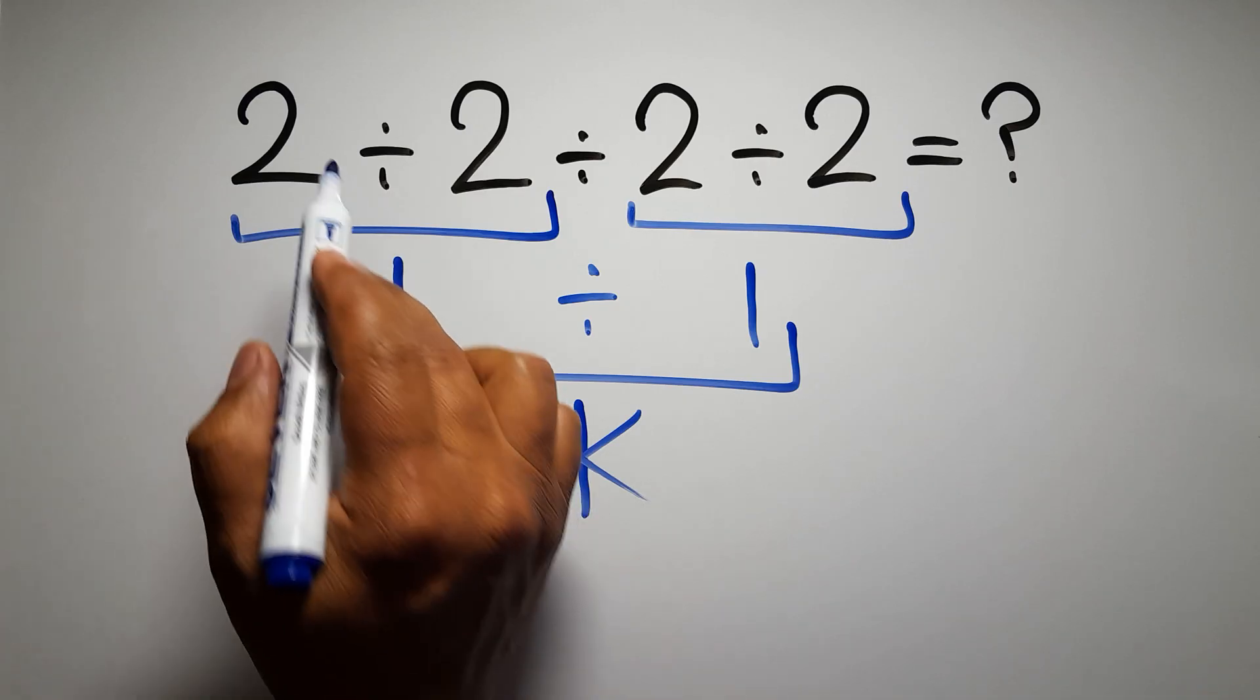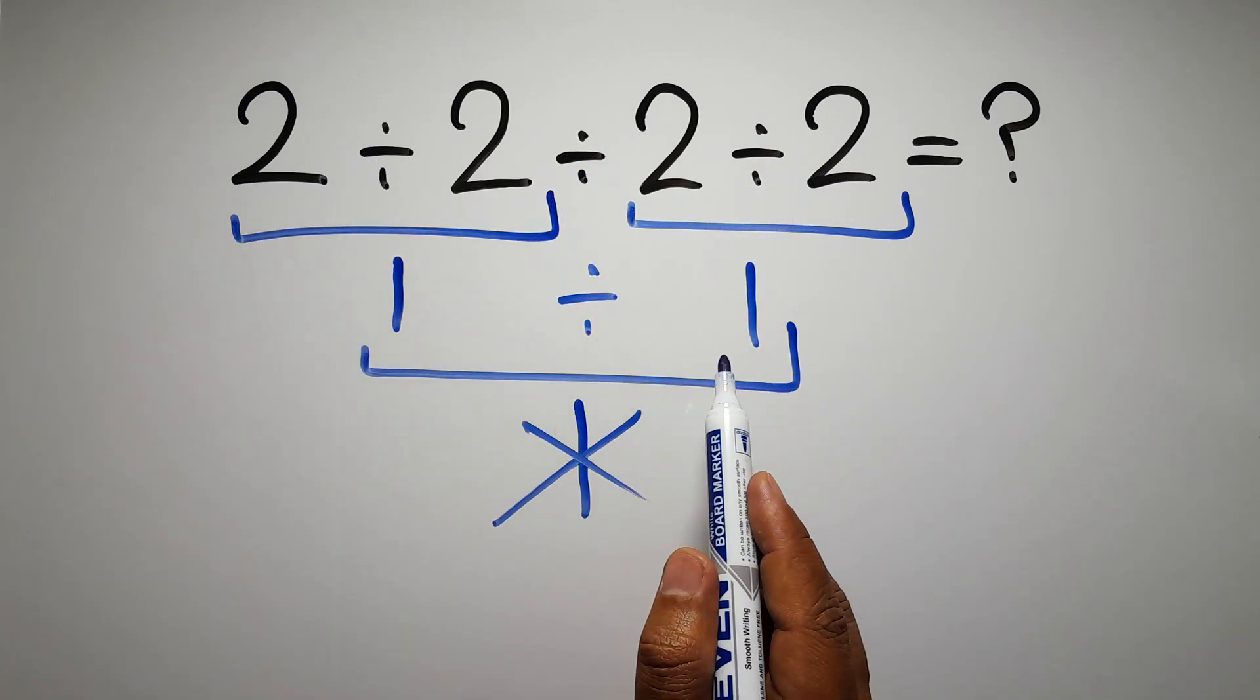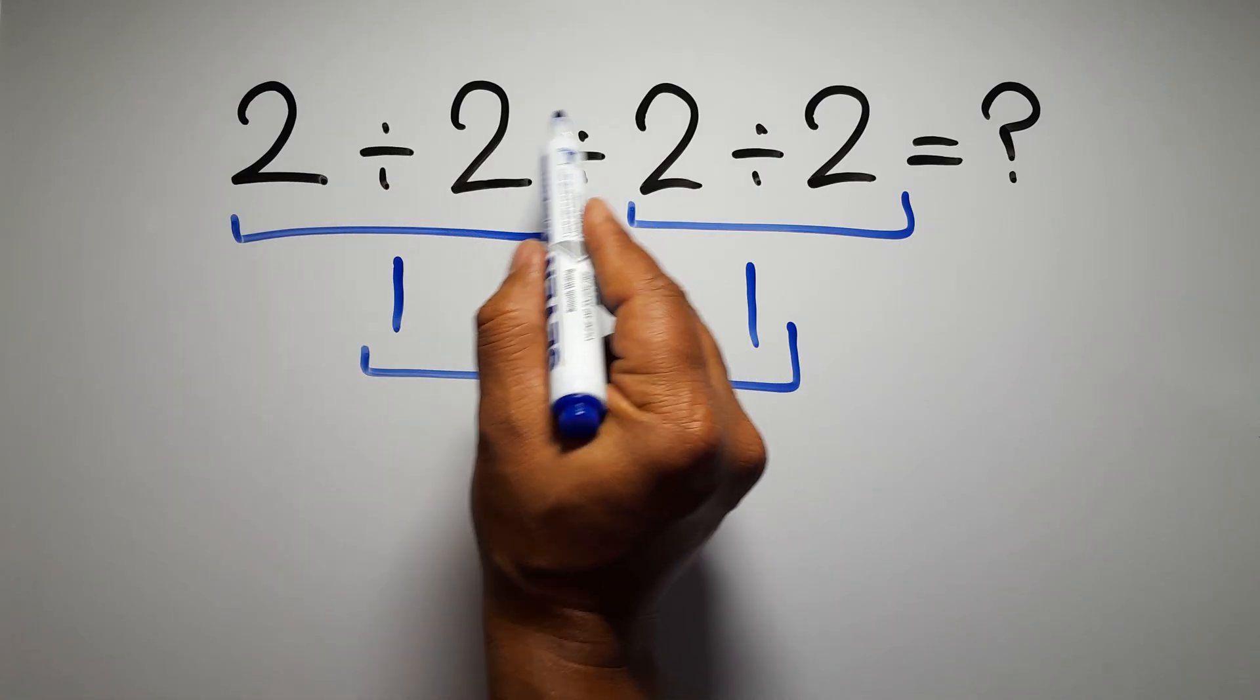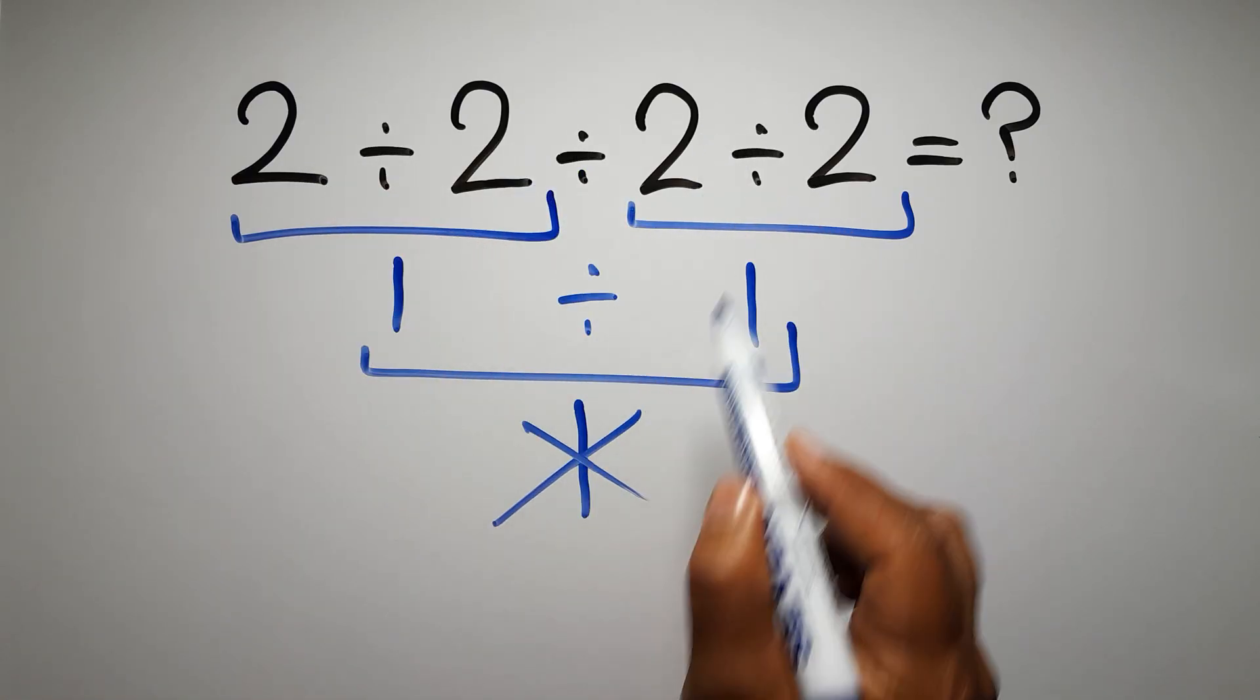Because when we have more than one division in an expression, we have to work from left to right. So here first we have to do this division, then this division, and finally this division.